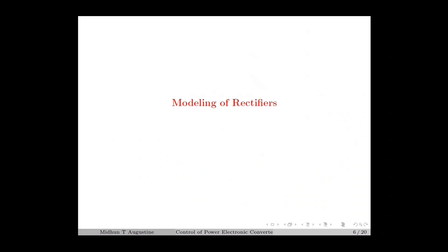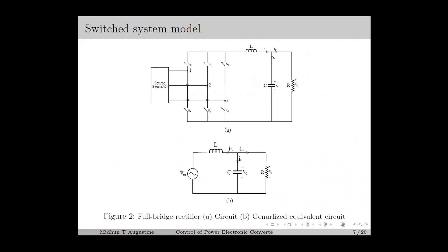We start with the modeling of the rectifiers, in which we consider a three-phase controlled rectifier as shown in figure 2. This part of the circuit is the rectifier part, and we have an output LC filter, which is similar to the full bridge converter and buck converter. At a time, only two legs of the bridge are active, which means one leg is inactive in which both the switches will be off, and in the remaining two legs, one switch will be on and the other will be off. The switch configuration in the rectifier decides the input voltage across this LC circuit.